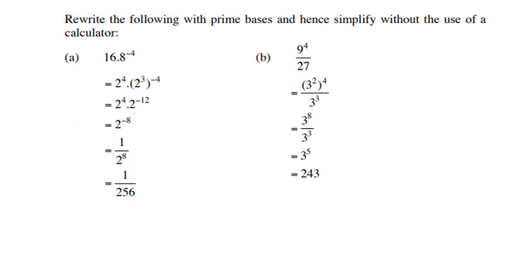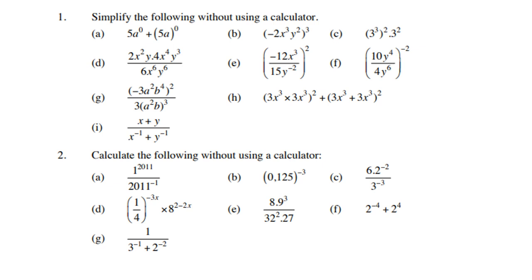Now let's rewrite the following with prime bases and hence simplify without a calculator. For part a, 16 is not prime so write it as 2 to the power 4; 8 is not prime so write it as 2 to the power 3. Then 3 times negative 4 is negative 12, and 4 minus 12 is negative 8 — bring it down to get 1 over 256. For part b, 9 to the power 4 gives 3 to the power 8 and 27 is 3 cubed; subtracting gives 3 to the power 5, which is 243. Work through all the remaining examples to make sure you can handle this grade 10 material, which is very important for grade 11.